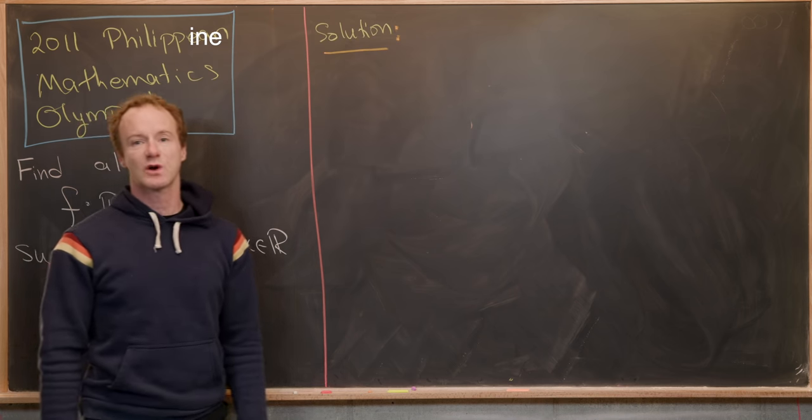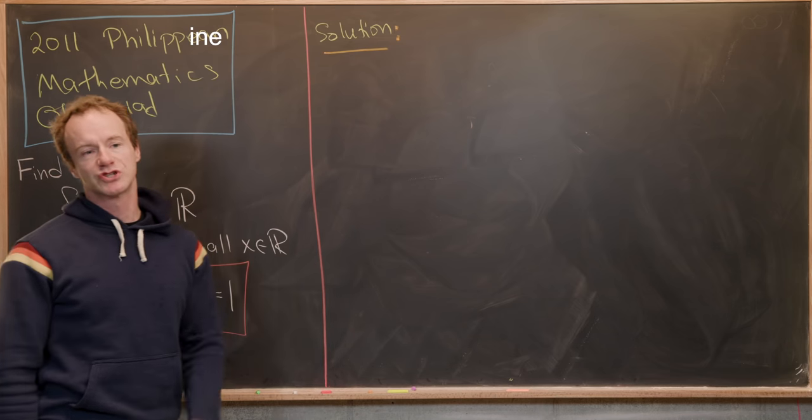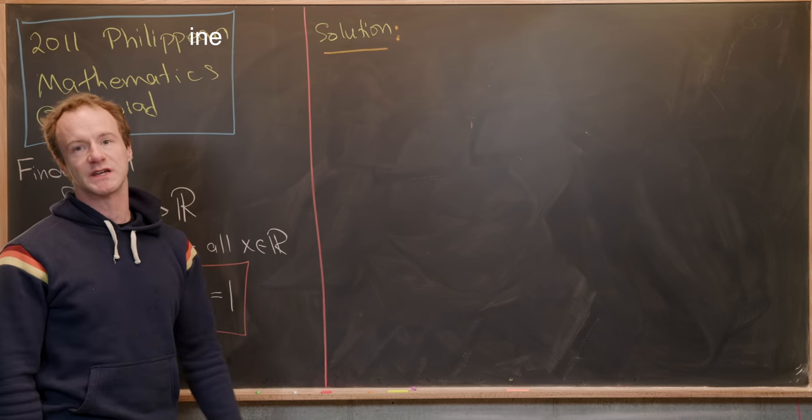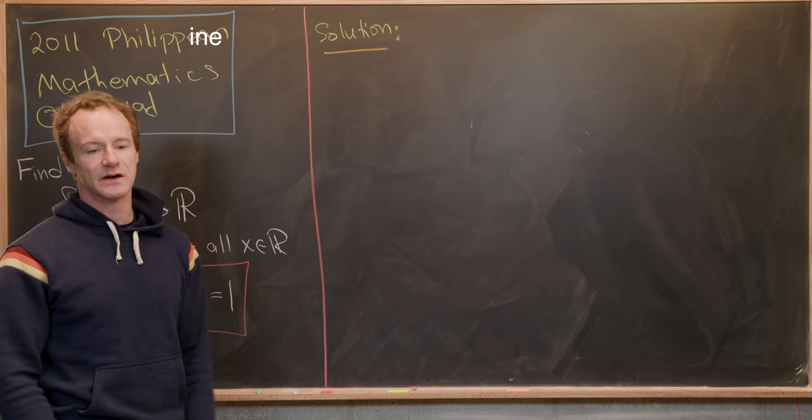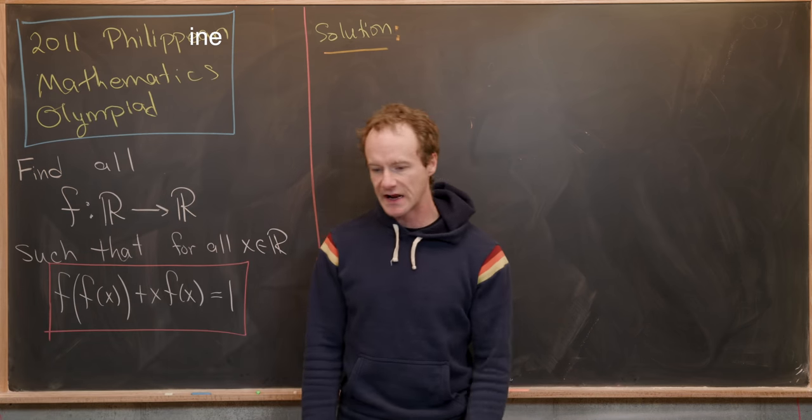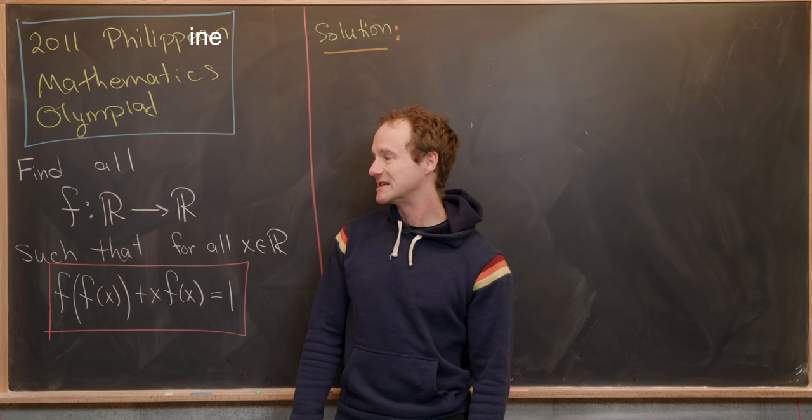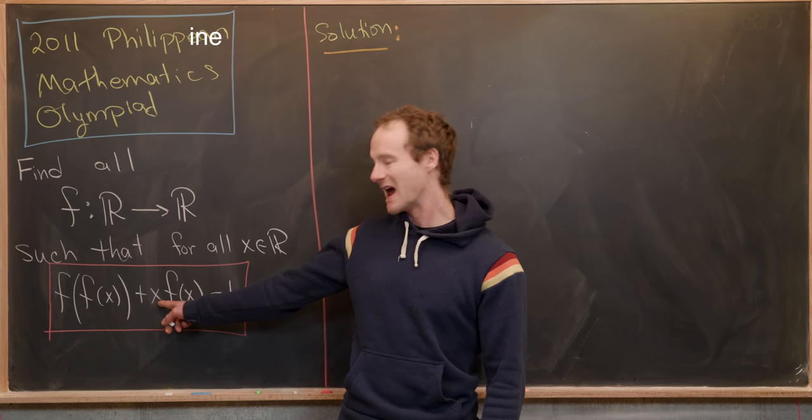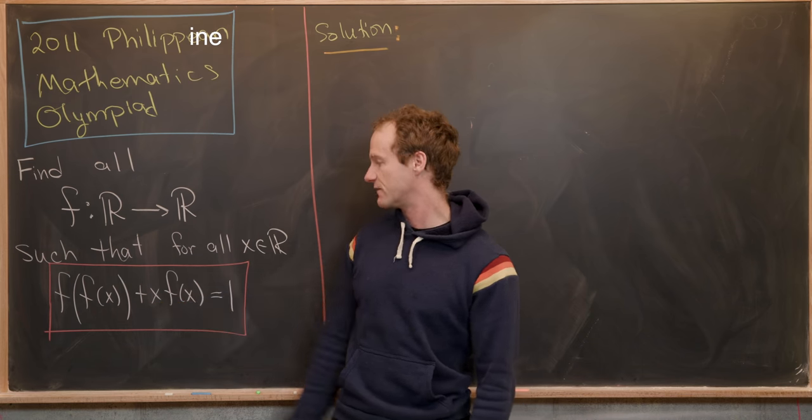So hopefully those hints were helpful. Now we're ready to jump into a solution. And we'll jump into our solution using our first hint, which is to take nice values for x. And I think x equals 0 is maybe the nicest value to start off with because we have this x, which is floating outside of the function.